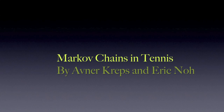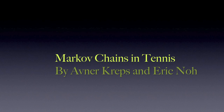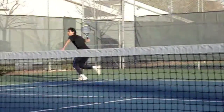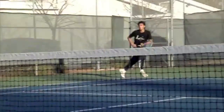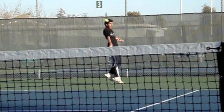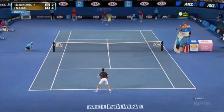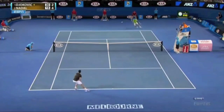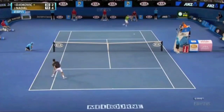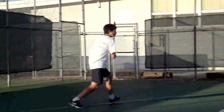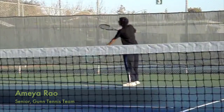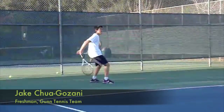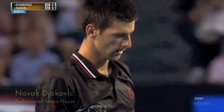I'm Avner Kreps. I'm Eric Ngo. Our project is entitled Markov Chains in Tennis. The goal of our project was to find what percentage of each tennis ground stroke ended up as a forehand cross-court, a forehand down the line, a backhand cross-court, or a backhand down the line. We collected data from 24 games of tennis: 12 from a gun varsity match featuring senior Amaya Rao against freshman Jake Chua Gozani, and 12 from the 2012 Australian Open Finals featuring Rafael Nadal against Novak Djokovic.